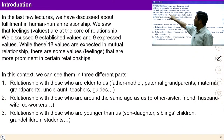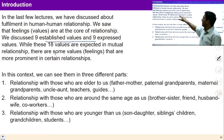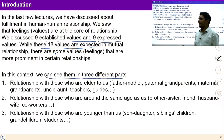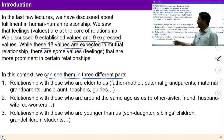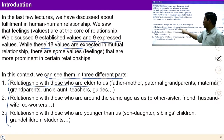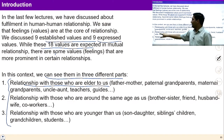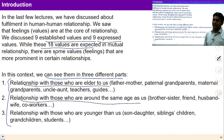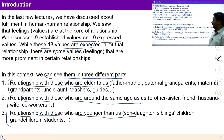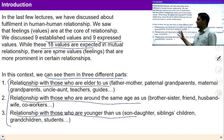In the last lectures we studied 9 established values and 9 expressed values, a total of 18 values. In this context we can see 3 different kinds of relationships, based on 3 different age groups around us: those who are elder to us, those who are around the same age, and those who are younger than us.